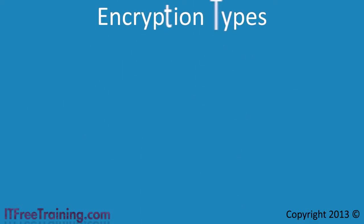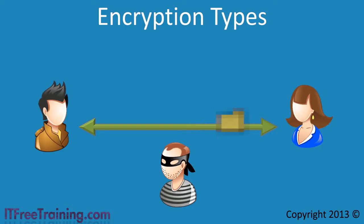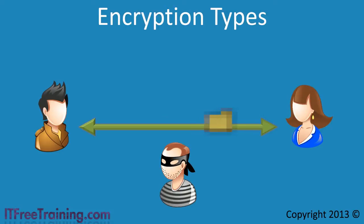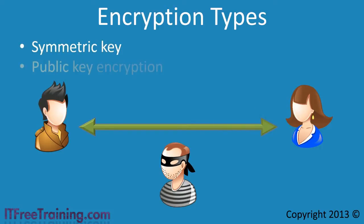In today's environment, encryption is an important part of computing. In order to keep your files secure and have secure communication, you need to use encryption. Encryption is the process of taking data and encoding it into a form that cannot be read by unauthorized people. There are two types of encryption schemes that are used: Symmetric Key and Public Key encryption.